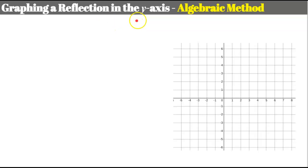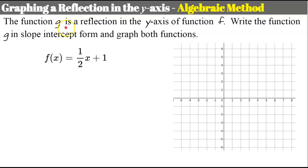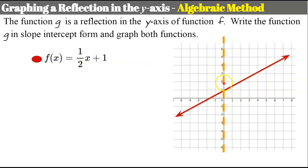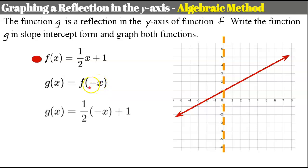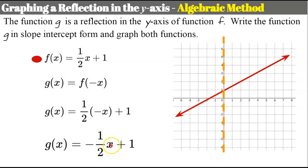Let's practice graphing a reflection in the y-axis using the algebraic method. Function g is a reflection in the y-axis of function f; write g in slope-intercept form and graph both. Graphing function f: y-intercept of 1, rise 1, run 2. Algebraically, we rewrite function g by replacing x in f with negative x: 1/2 times negative x equals negative 1/2x. Graphing g in blue: y-intercept of 1, rise 1, run negative 2 — there is function g.